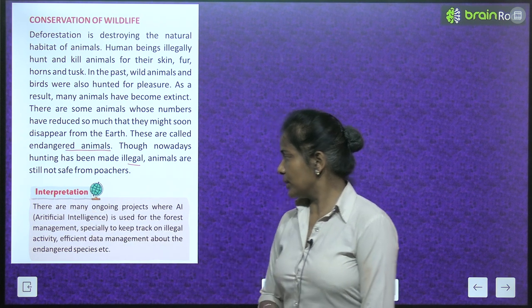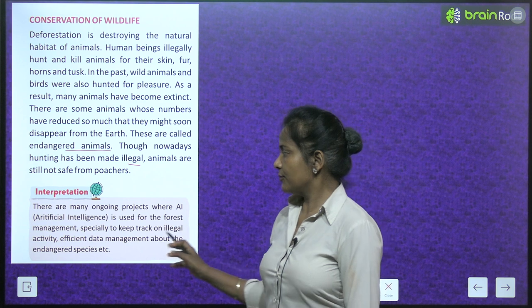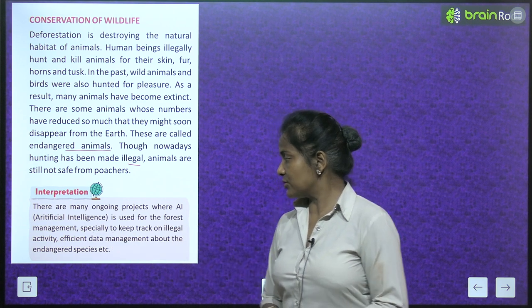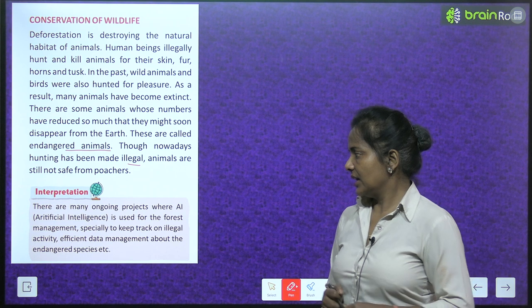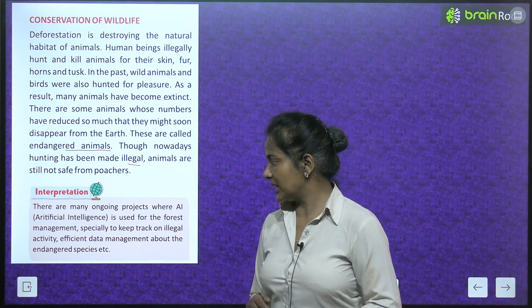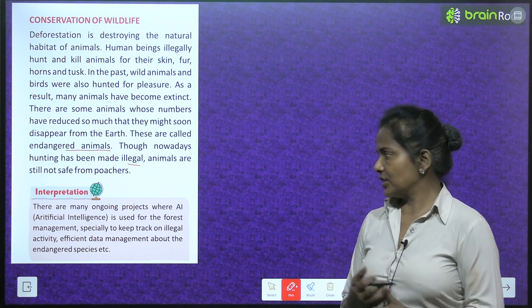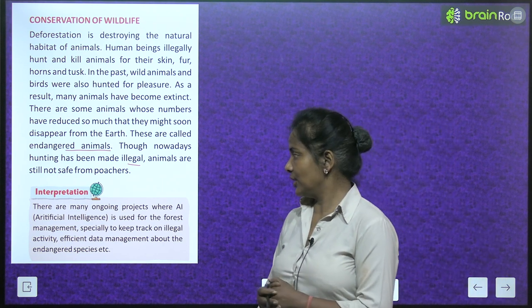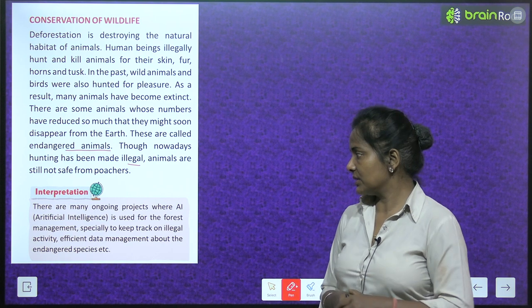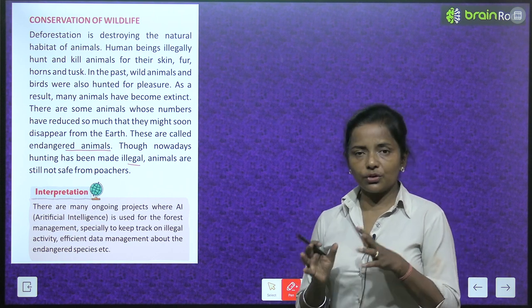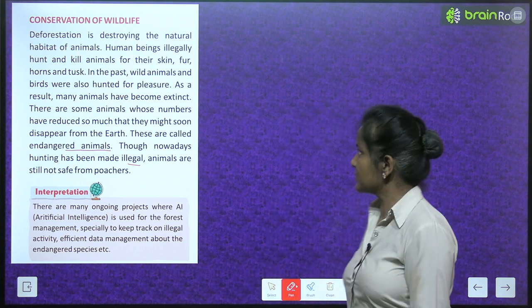There are many ongoing projects where AI — artificial intelligence — is used for forest management, especially to keep track of illegal activity and for efficient data management about endangered species. AI can help do forest management and keep track of illegal activities in the forest.